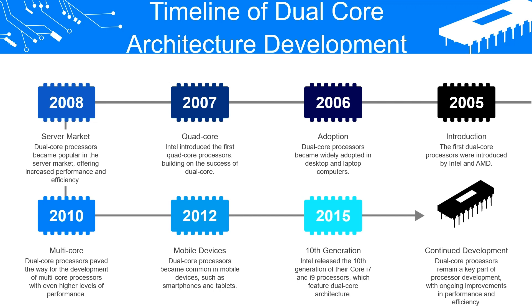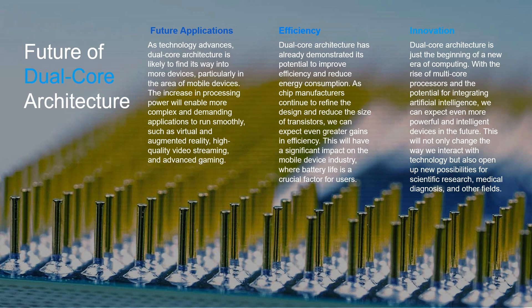Let's see the future of dual core architecture. As technology advances, dual core architecture is likely to find its way into more devices, particularly in the area of mobile devices. The increase in processing power will enable more complex and demanding applications to run smoothly, such as virtual reality, high quality streaming, and advanced gaming. Dual core architecture has already demonstrated its potential to improve efficiency and reduce energy consumption, and as chip manufacturing continues to refine designs and reduce transistor size, we can expect even greater gains in efficiency — significantly impacting the mobile device industry where battery life is a crucial factor.